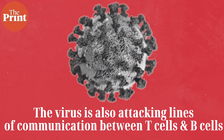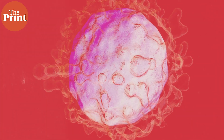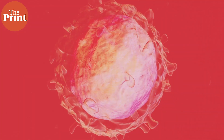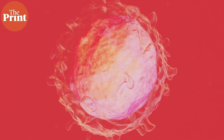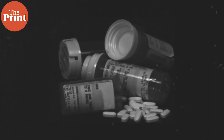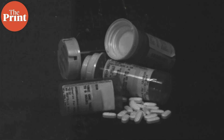The virus is also attacking lines of communication between T-cells and B-cells. As we've seen, T-cells are crucial to signal to B-cells the kind of antibodies to produce. All of this requires modulating cytokines, and we even know which ones, for the most part.